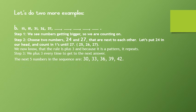Step 3: We plus 3 every time to get to the next answer. The next five numbers in the sequence are 30, 33, 36, 39, and 42.